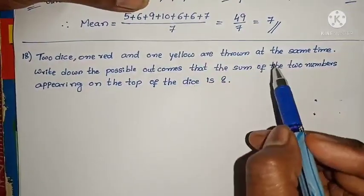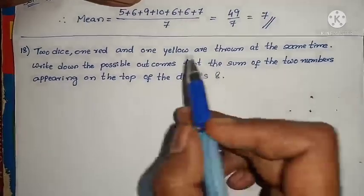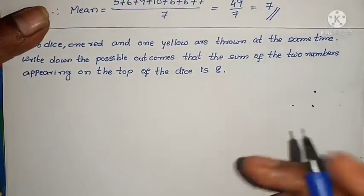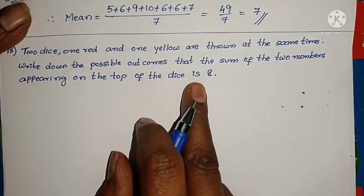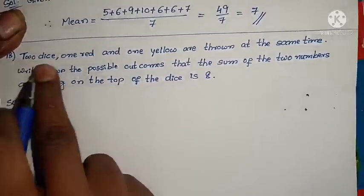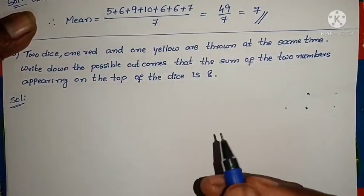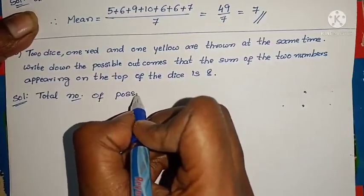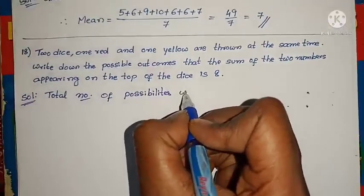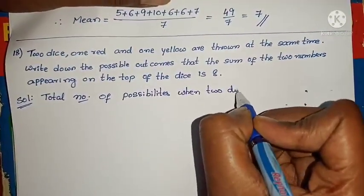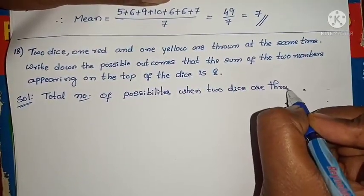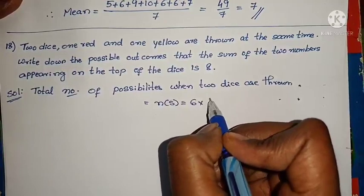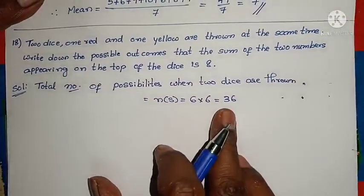Question 18: two dice — one red and one yellow — are thrown at the same time. Write down the possible outcomes where the sum of the two numbers appearing on top is 8. The total number of possibilities when two dice are thrown equals n(S) = 6 × 6 = 36.